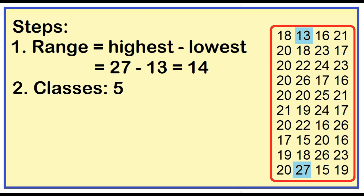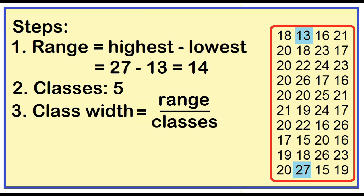Step 2: Decide on the number of groups or classes. In this example, the number of groups or classes is 5. Step 3: Divide the range by the number of desired classes to find the class width. 14 divided by 5 is equal to 2.8, which is approximately equal to 3.